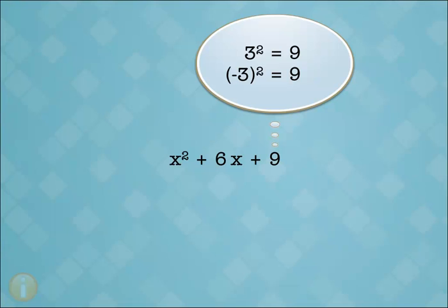Now we can factor it easily. All we have to decide is whether the second term is plus 3 or minus 3. The middle term of the trinomial is positive. So we use positive 3. The factors are both x plus 3. So the answer is x plus 3 squared.